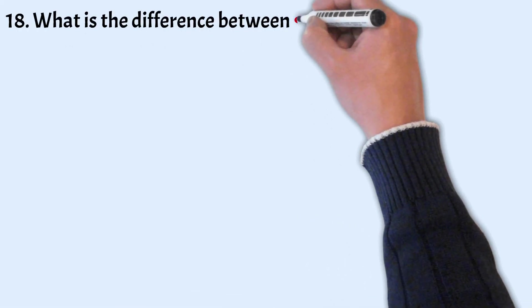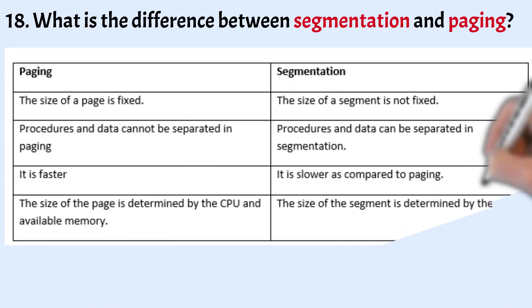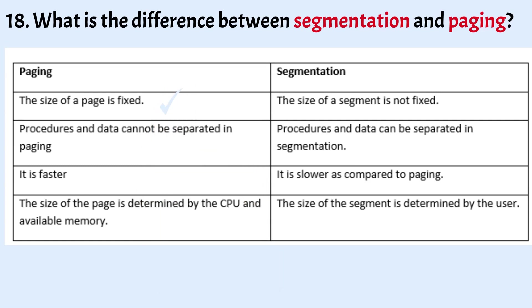What is the difference between segmentation and paging? Segmentation is a memory management technique that divides main memory into segments of various sizes, working in a similar manner to paging. Key differences: in paging the page size is fixed, whereas in segmentation the segment size is not fixed; in paging, procedures and data cannot be separated, whereas they can in segmentation; paging is faster while segmentation is slower; the page size is determined by the CPU and available memory, whereas segment size is determined by the user.